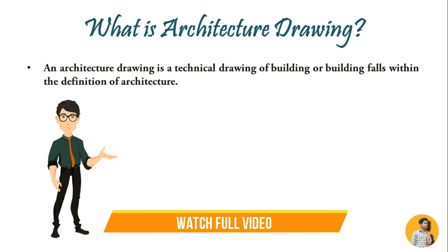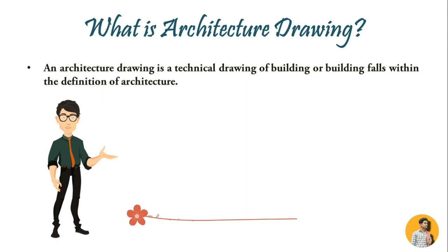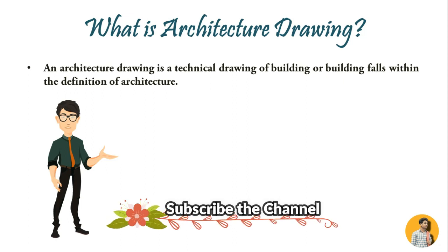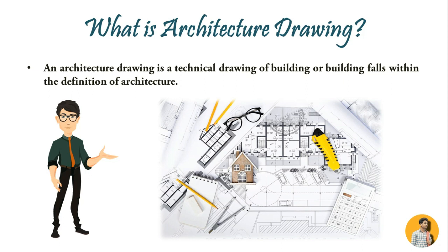An architecture drawing is a technical drawing of a building or anything that falls within the definition of architecture. Architecture drawings are made according to a set of conventions which includes particular views like floor plan, section, sheet sizes, units, etc. Architecture drawings are used by architects to develop their design ideas to clients and also to communicate ideas and concepts with the help of drawings.